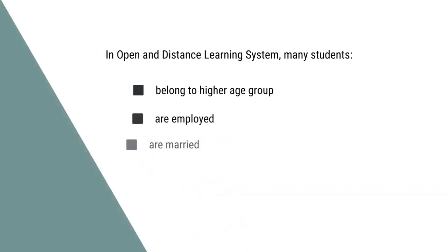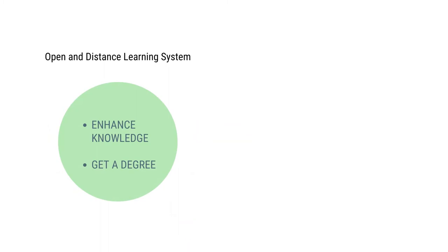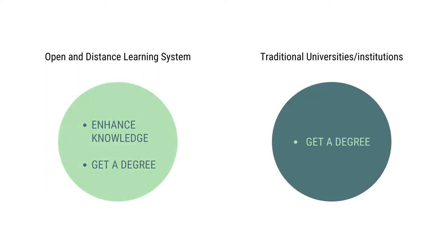Many of them are employed. In a traditional university system, you don't allow a student to be employed and at the same time a full-time student. So in open and distance learning, many students are in the higher age bracket, they are employed, many of them are married, and many have a degree or diploma in the subject in which they have taken admission but want to enhance their knowledge. Some have come to get a degree, some to acquire knowledge. The profile of learners in ODL is completely different and you have to understand that.